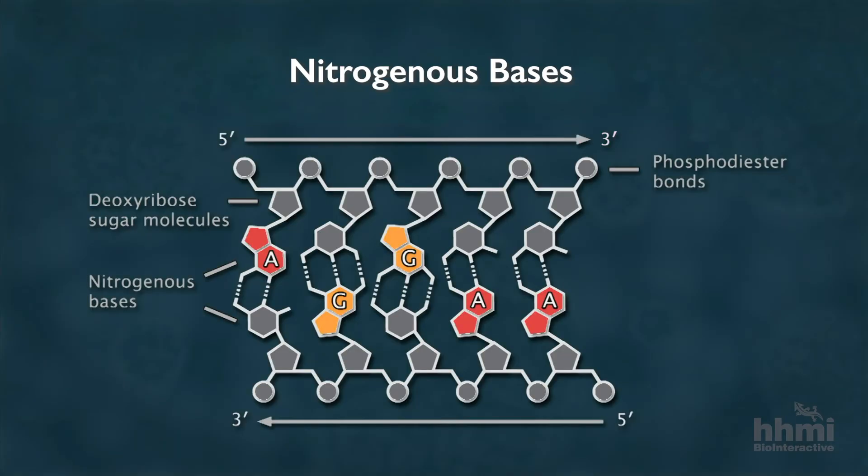DNA has two kinds of nitrogenous bases. The first kind are the purines: adenine and guanine. The second kind are the pyrimidines: thymine and cytosine.